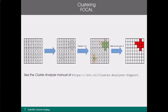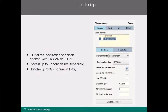We also have the VOCAL clustering algorithm available in our tool. Due to time constraints, we cannot explain the VOCAL clustering algorithm in detail — you can read how it works in our cluster analyser manual, which can be downloaded from our website. You can cluster your localisations using either the DBscan or VOCAL algorithm for one channel at a time. We do allow you to process two channels simultaneously, so you can cluster one channel using DBscan while clustering another using VOCAL. In total, our tool can handle up to 32 channels.